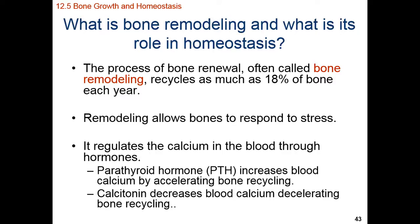Two hormones that help regulate blood calcium levels by adding or subtracting from bone are parathyroid hormone, PTH, and calcitonin. PTH increases the activity of osteoclasts — those cells that break down our bones — so as PTH increases in the bloodstream, more osteoclasts dissolve more bone and more calcium goes into the bloodstream. When we have low blood calcium, we release PTH. When we have high blood calcium, we release calcitonin. Calcitonin has the exact opposite effect of PTH: PTH increases osteoclast activity, while calcitonin decreases osteoclast activity, slowing down bone dissolution so that osteoblasts can catch up and lower blood calcium concentrations.